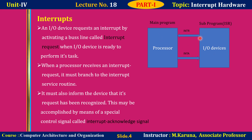When the processor receives an interrupt request, it must branch to the interrupt service routine. It must also inform the device that its request has been recognized. This may be accomplished by means of a special control signal called the Interrupt Acknowledge Signal, INTA. Initially, when I/O devices are ready to perform their task, they send the interrupt request to the processor. Then the processor jumps to the respective subroutine. Before jumping to the subroutine, the processor sends the interrupt acknowledge signal to the I/O devices, indicating recognition of the request signal.